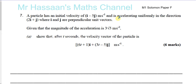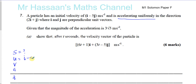The key is 'accelerating uniformly,' which means the SUVAT equations will apply. We have the initial velocity, which is i minus 5j. We need to find the velocity at any particular time t. The acceleration: we have the magnitude of the acceleration, which is 3 root 5, and we also have the direction of the acceleration, which is 2i plus j.